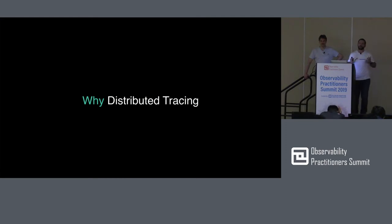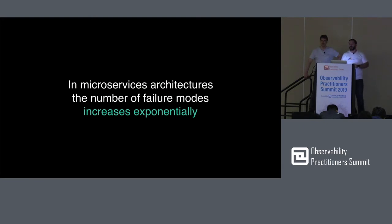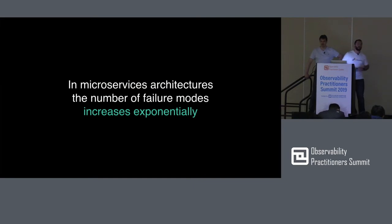What I want to talk about is why you should care about distributed tracing. As we deal with more complex microservices-based architectures — those deep systems — it can be very difficult to figure out what's going on. In distributed systems, communication between nodes is unreliable, and in the microservices world the answer is to double down on those unreliable connections. As you move from a monolithic application to a microservices-based application, the number of failure modes grows exponentially, and you need to handle these scenarios to ensure high availability.